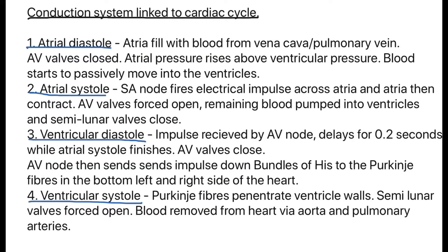We are going to talk about the conduction system linked to a cardiac cycle — this is the bread and butter of what you need to know. You need to be active with these videos, making notes and learning them, then applying them through past paper questions. The first step is atrial diastole: the atria fill with blood from the vena cava or the pulmonary vein, depending on which side of the heart. The atrioventricular valves — the tricuspid and bicuspid valves — close, then atrial pressure rises above ventricular pressure and blood passively moves into the ventricles.